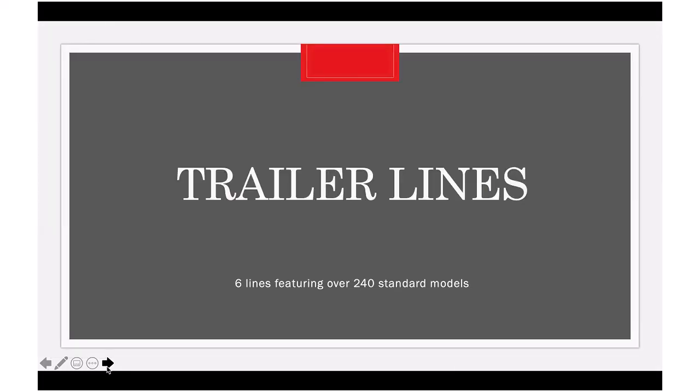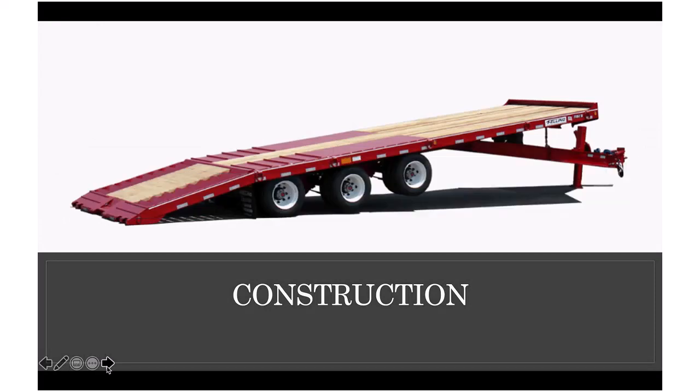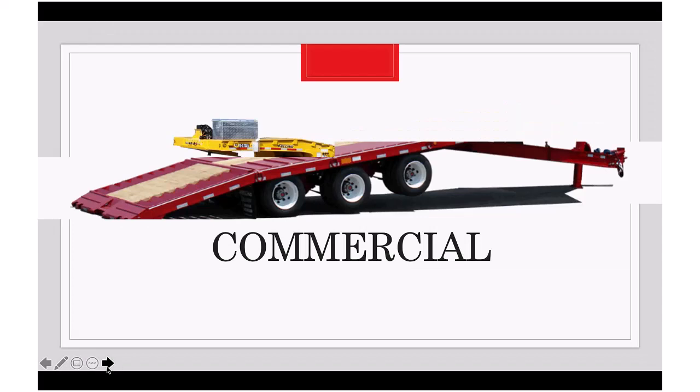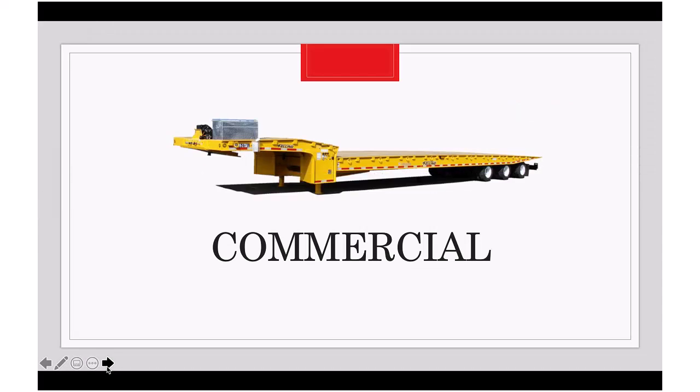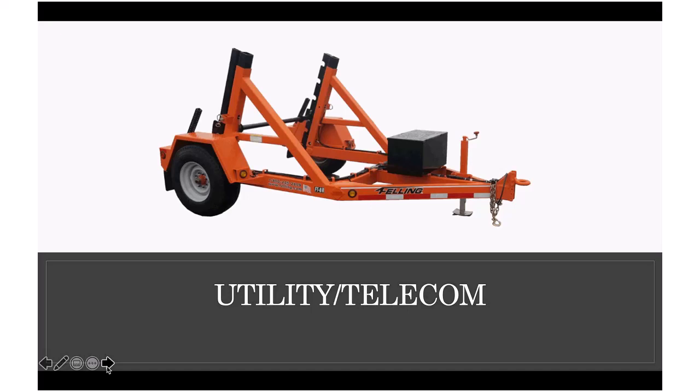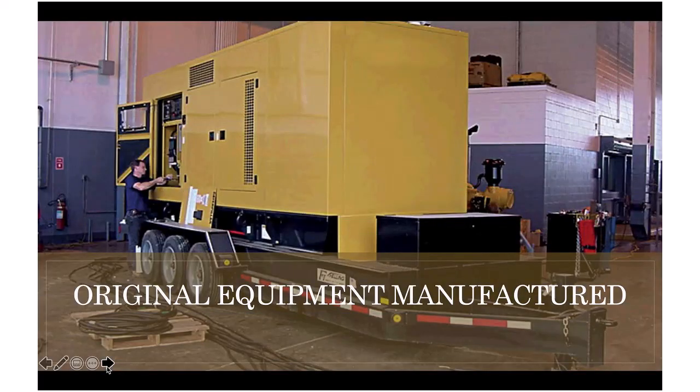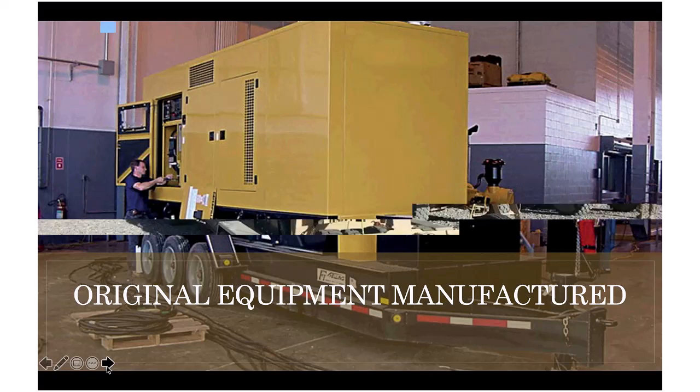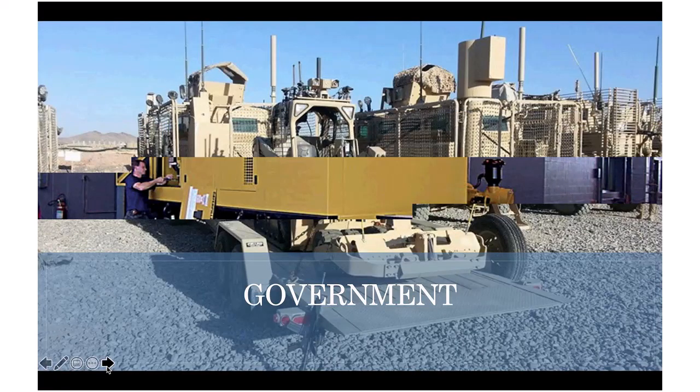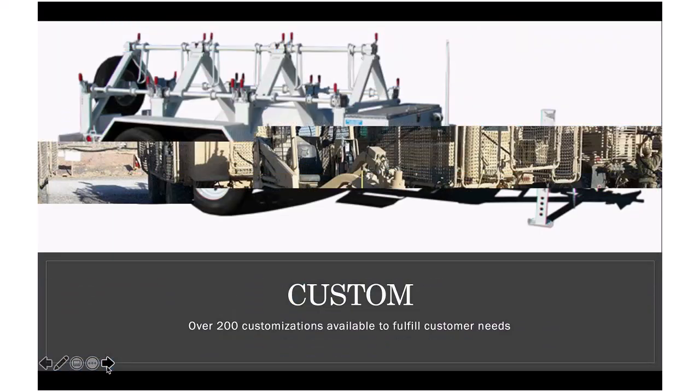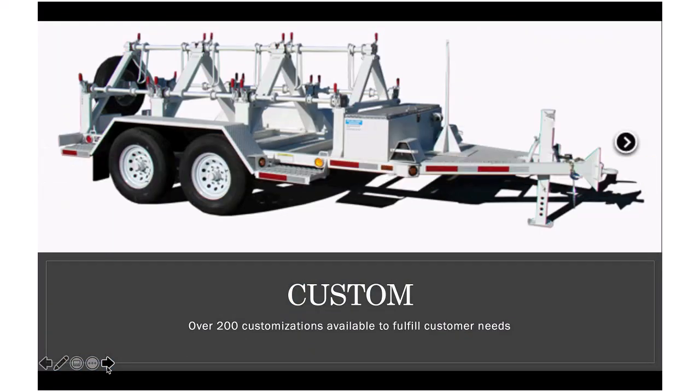Felling Trailers has six lines that feature over 240 standard models. They have the construction model, the commercial one, the utility telecom model, the original equipment model, the government model, and lastly they customize different trailers based on customer needs.